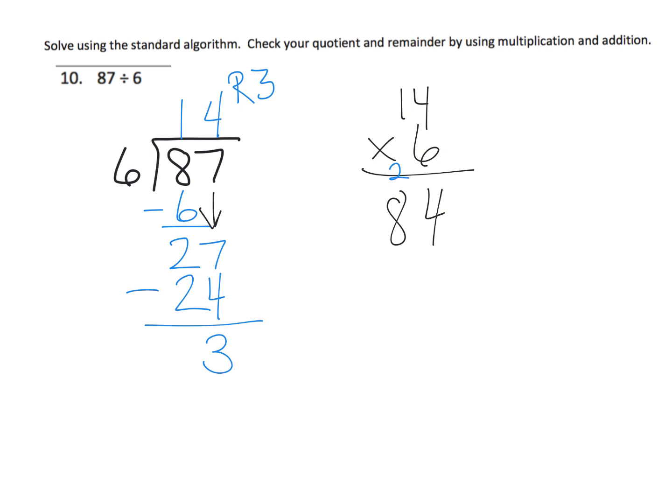All right, so now we have 84. But we've got to take that 84, add in our remainder of 3, and we get 87, which is exactly what we started with, and that tells us we're probably correct.